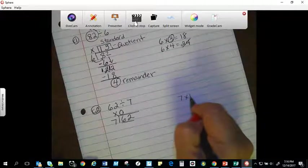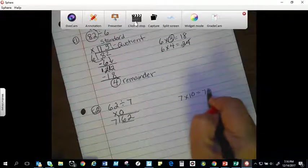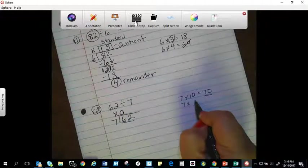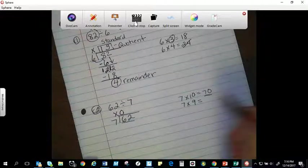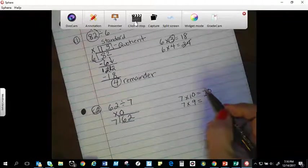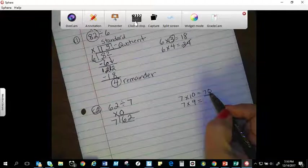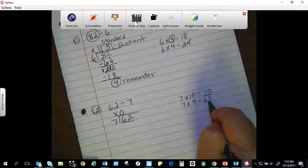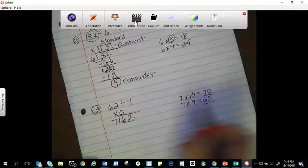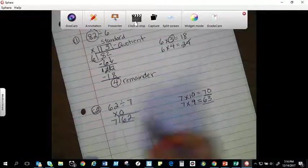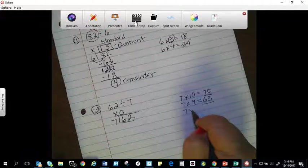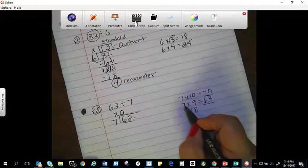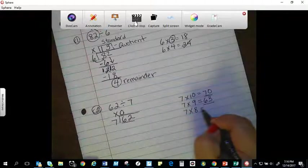I already know that seven times ten equals seventy, and that's too big. What is seven times nine? If I subtracted out a group of seven from seventy, it's going to give me sixty-three. Sixty-three is too big because I'm only needing sixty-two. So seven times eight, I'll subtract out another group of seven and it'll give me fifty-six.